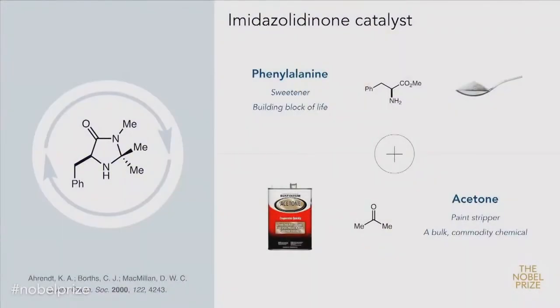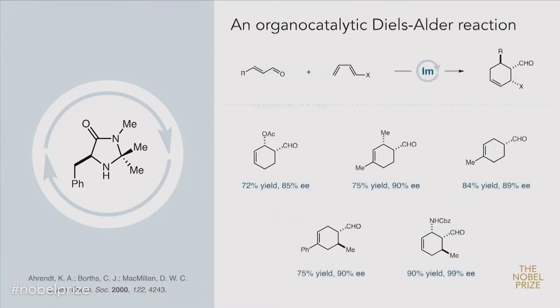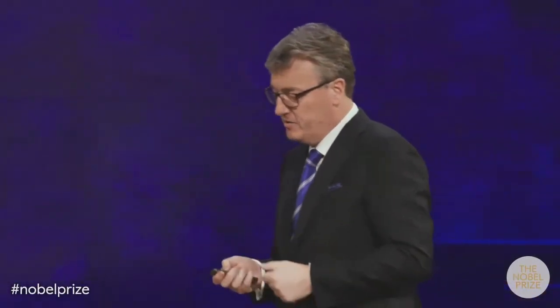That was six of the most nerve-wracking months of my life. During that time we eventually arrived at a catalyst we thought was interesting: the imidazolinones. We were interested in imidazolinones for two major reasons. First, they're really inexpensive — made from phenylalanine, an amino acid building block of life, combined with acetone, which is actually a paint stripper. The other reason we really liked them was we thought they should be good at generating the production of one mirror image in preference to the other. When we tested that, that's exactly what happened: we could now achieve 90% excesses of one over the other in the Diels-Alder reactions. As a young professor, you now have to write a manuscript and tell the world.